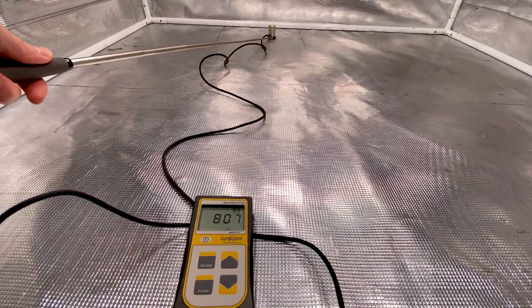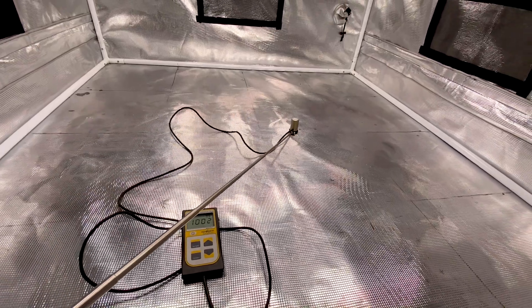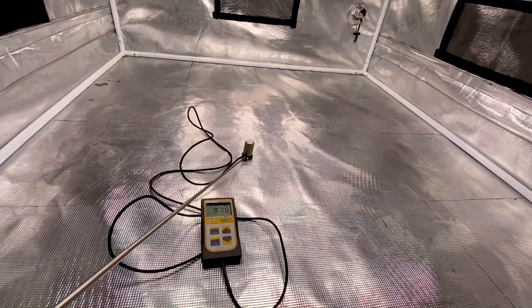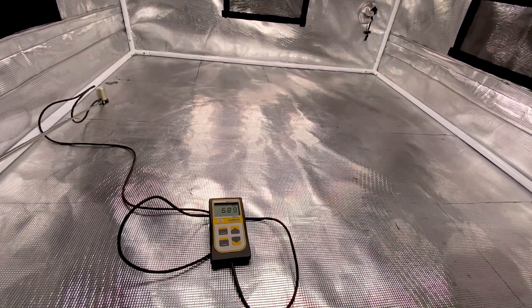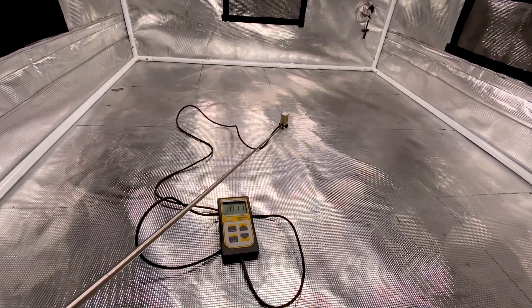You can see the uniformity drops as I move it around but right underneath the light you're getting about 900-1000 PPFD. To the sides it's dropping to right around 800 or so.